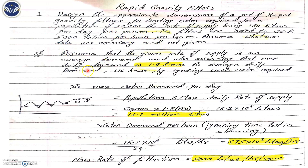Now we will start the problem. We are assuming that the given rate of supply is an average demand, and assuming that the maximum daily demand is 1.8 times the average daily demand. So in terms of peak, it goes around 1.8 times the average daily demand.